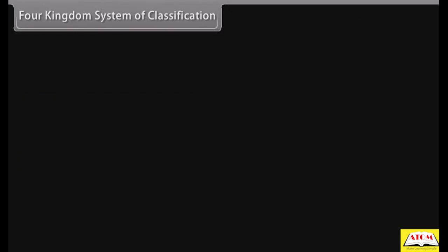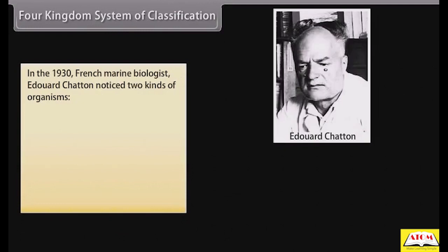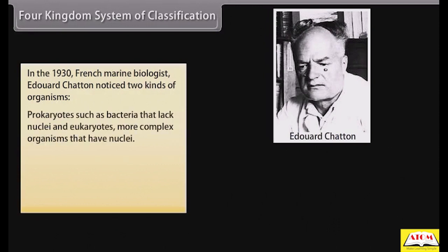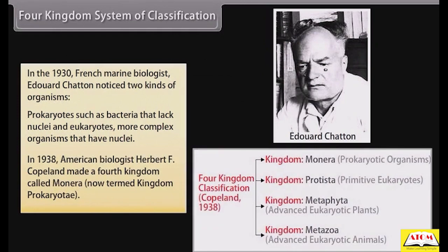Four Kingdoms System of Classification: In the 1930s, French marine biologist Edward Chatton noticed two kinds of organisms — prokaryotes, such as bacteria, that lack nuclei, and eukaryotes, more complex organisms that have nuclei. In 1938, American biologist Herbert F. Copeland made a fourth kingdom called Monura, now termed Kingdom Prokaryote.